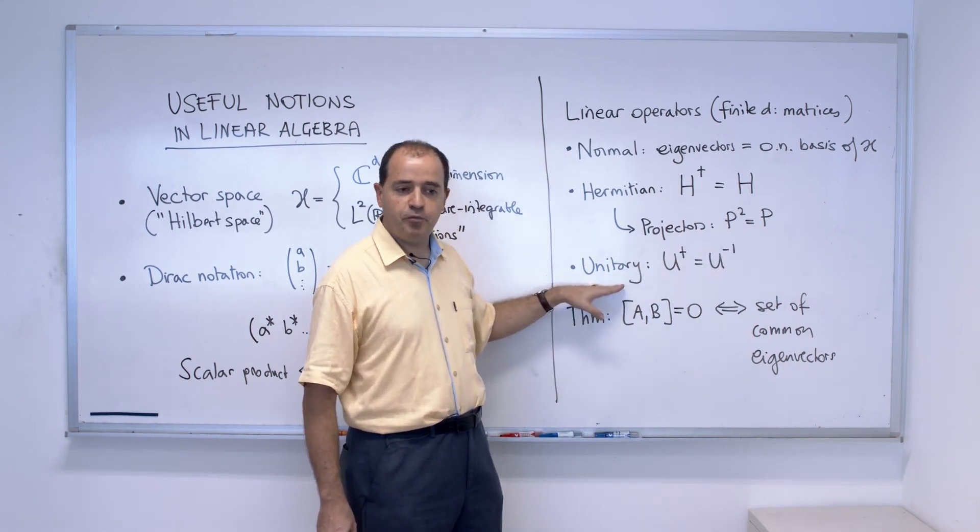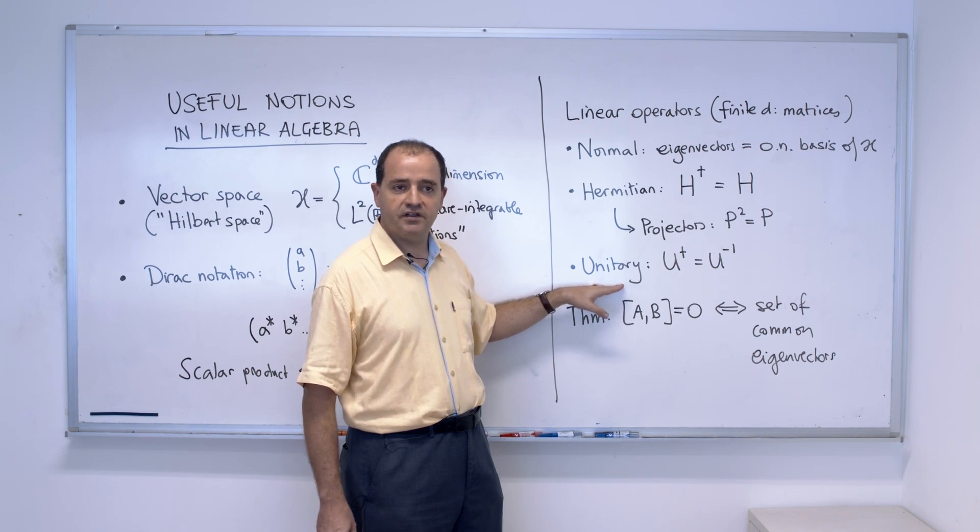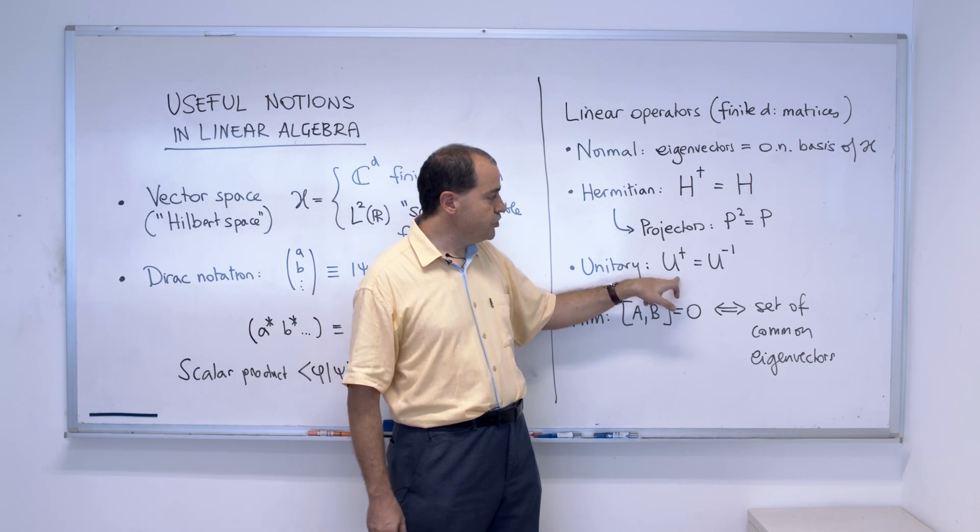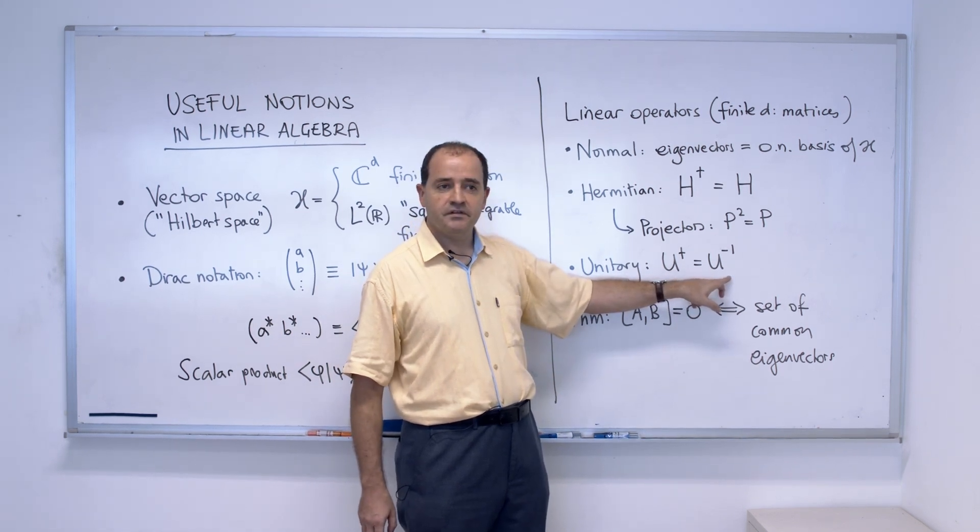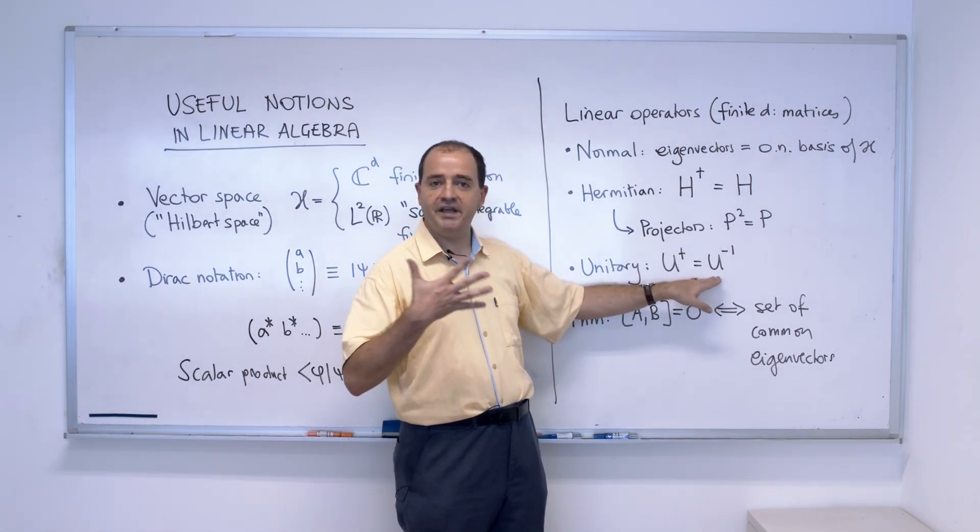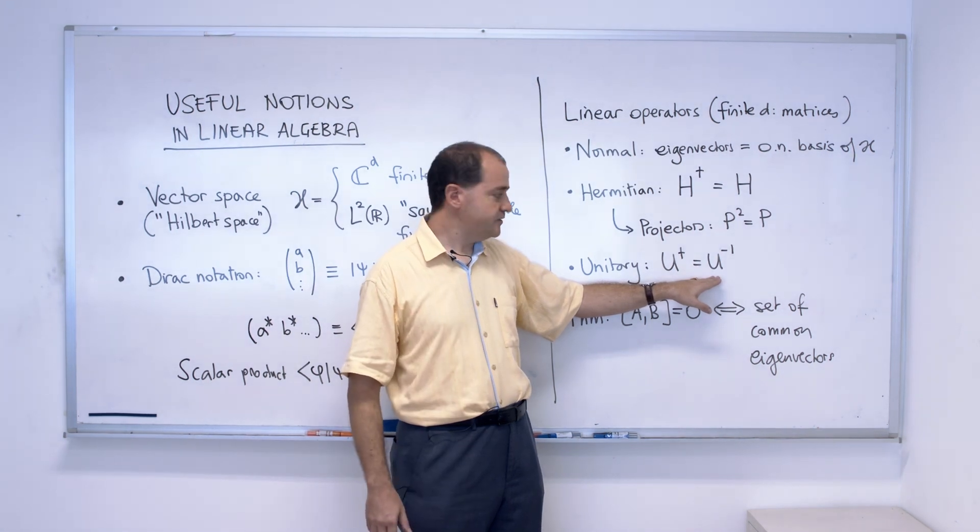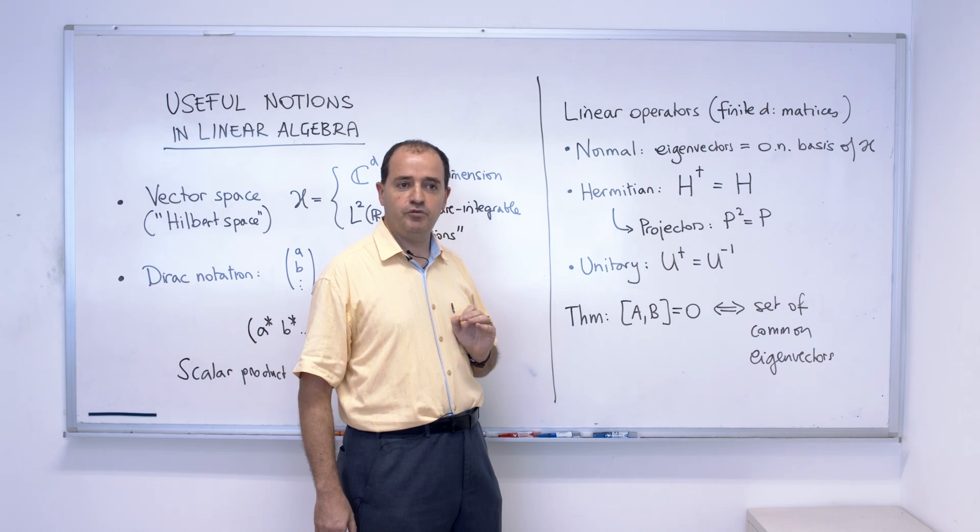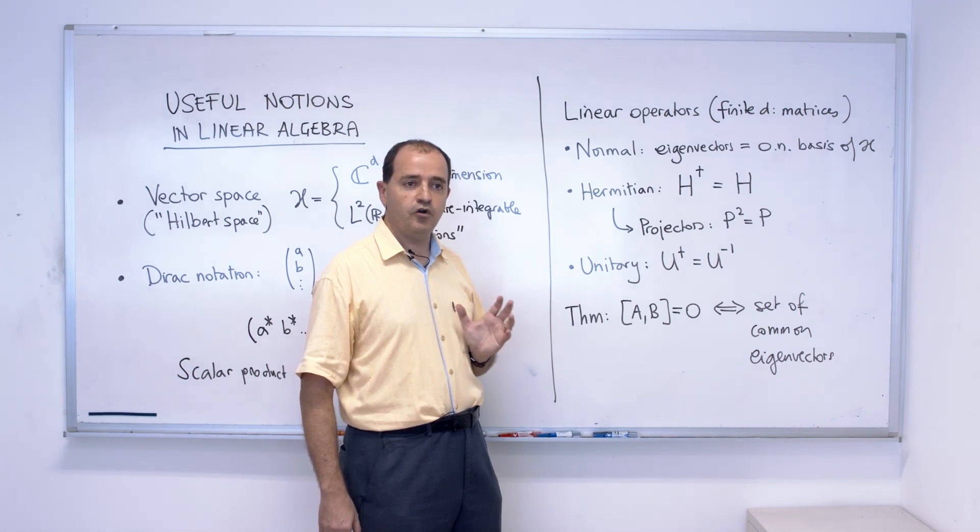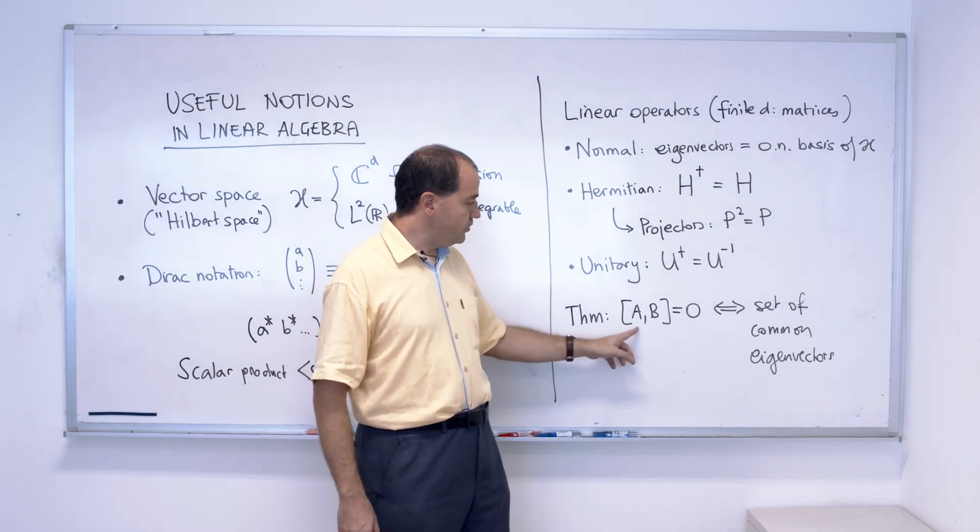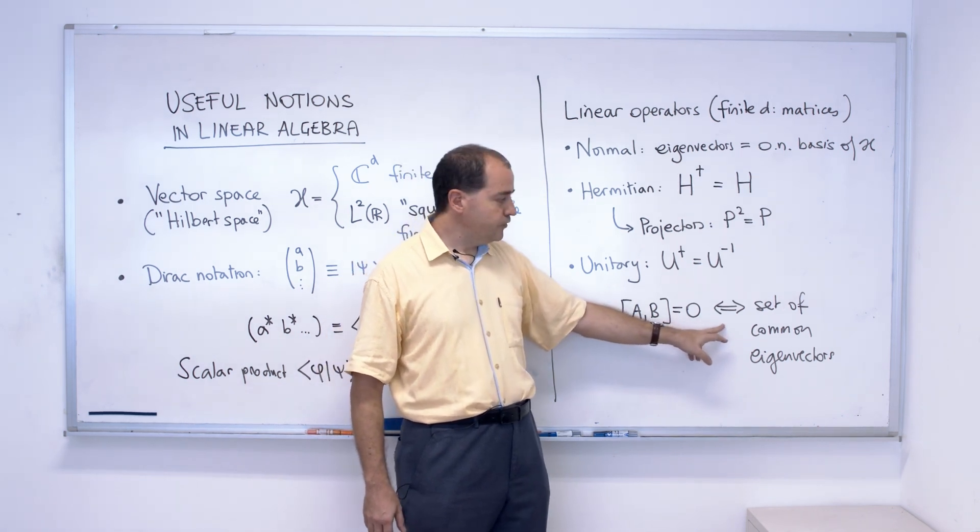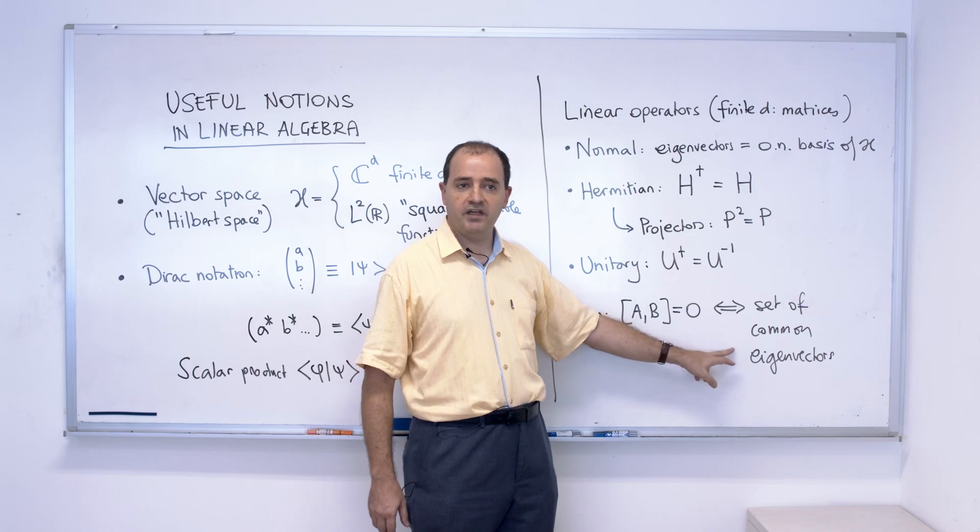The other very important class that will be used are unitary operators. Unitary operators are such that the adjoint is the inverse. These objects correspond to change of basis in a complex Hilbert space. Finally, another very important notion of linear algebra that will be used often is the following statement. Two operators commute if and only if they have a set of common eigenvectors.